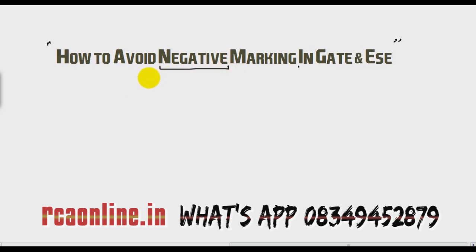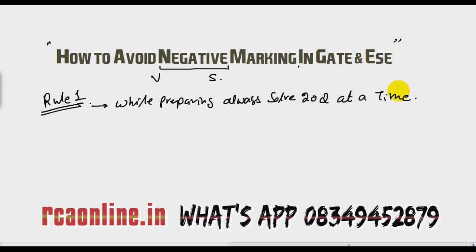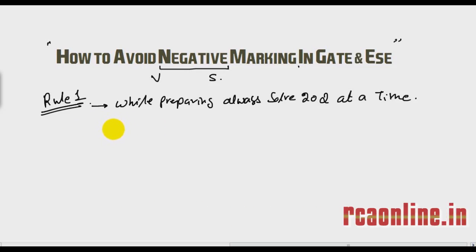So what is the preparation? Your first rule is: while preparing, always solve 20 questions at a time. That is rule number one. I have seen many students who solve one question, then see the answer, then solve the second question, then see the answer, then solve the third question and see the answer. This is a wrong way to preparation.